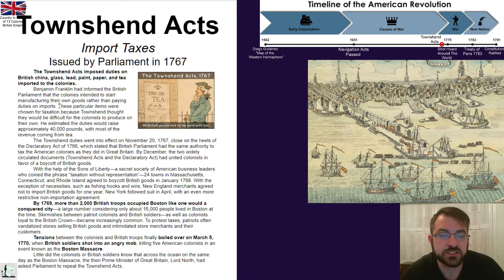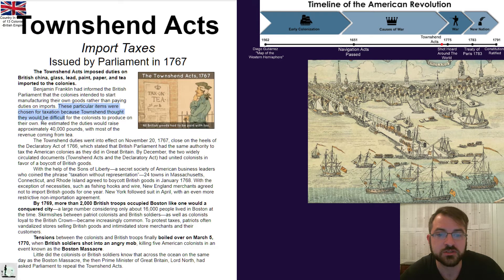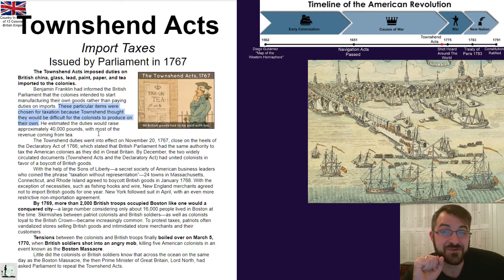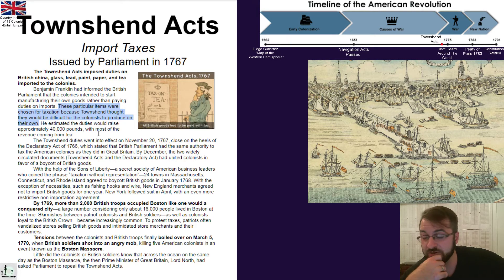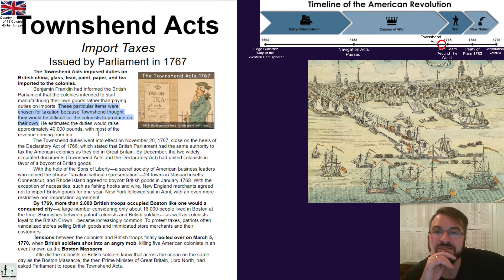These particular items were chosen for taxation because Townshend, the guy in charge of coming up with these acts, thought that they would be difficult for the colonists to produce on their own. You think you can make this stuff yourself? You want to start growing your own sugar? You want to start making all the stuff that the Stamp Act taxes? You just want to make your own paper?